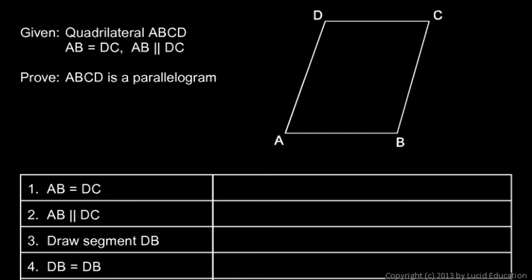The given information is: AB is equal to DC — let's mark that — and AB is parallel to DC, so let's mark that as well.